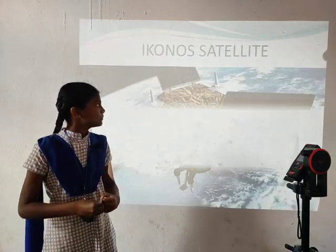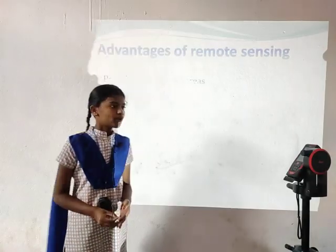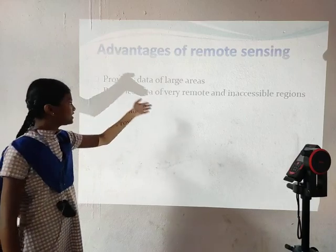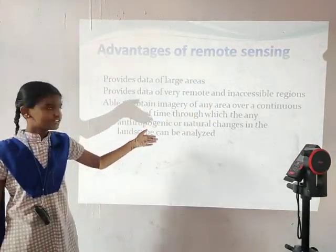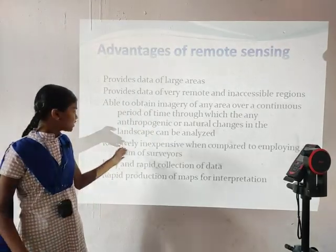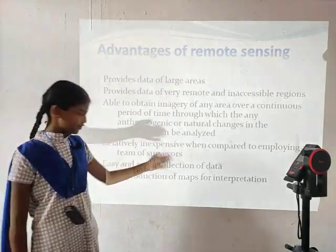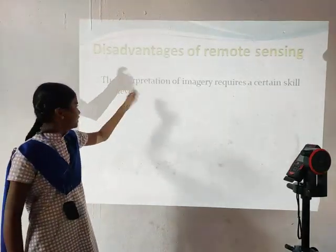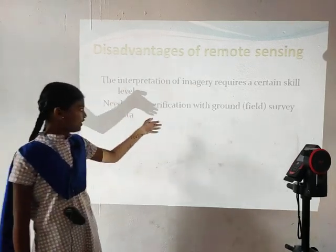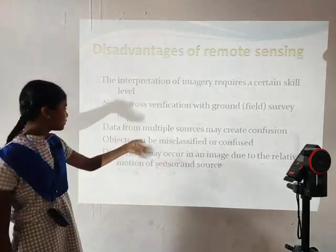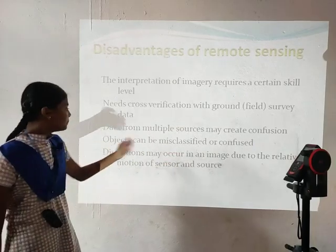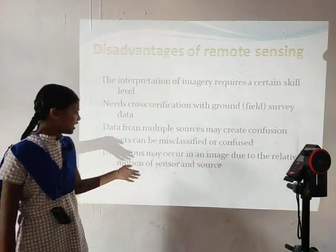Advantages and disadvantages of remote sensing. Advantages: provides data for large areas; provides data for very remote and inaccessible regions; able to obtain imagery for an area over a period of time to analyze anthropogenic or natural changes in landscapes; relatively inexpensive compared to employing a team of surveyors; easy and rapid collection of data; rapid production of maps for interpretation. Disadvantages: interpretation of imagery requires a certain skill level; need for cross-verification with ground field survey data; data from multiple sources may create confusion; objects can be misclassified or confused; errors may occur in imagery due to relative motion between sensors and source. Thank you.